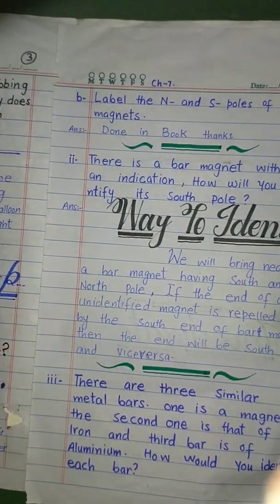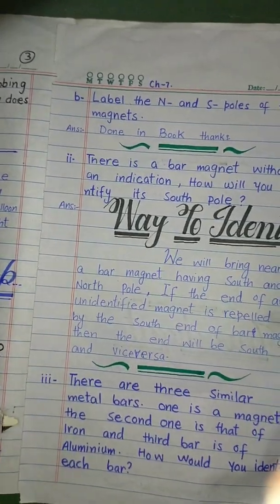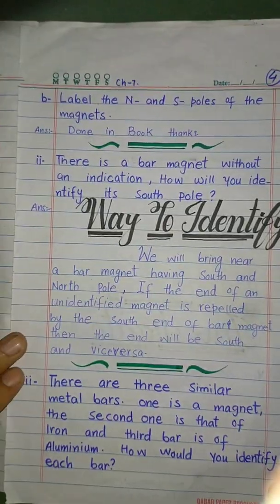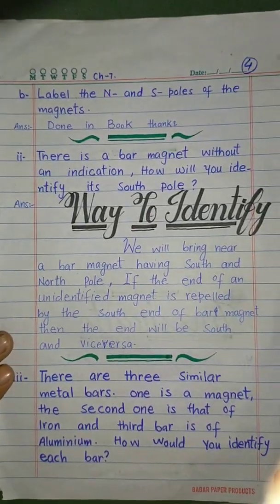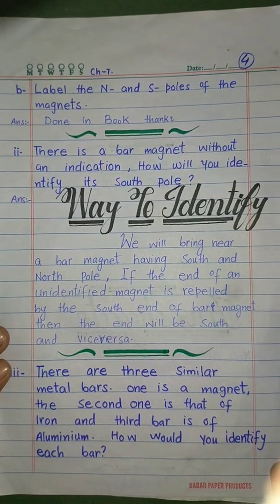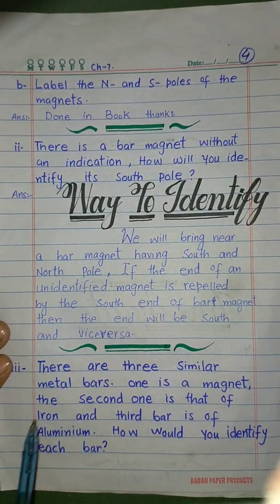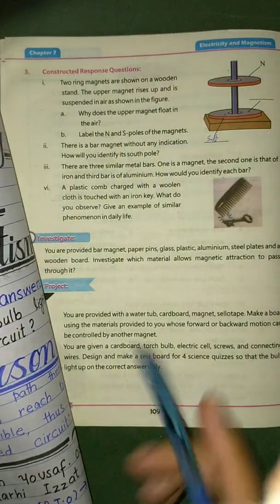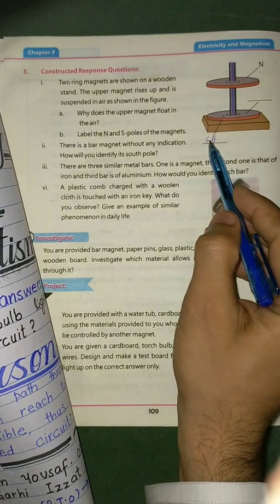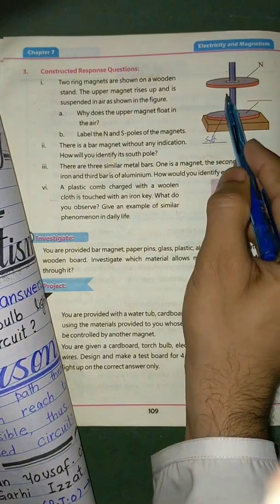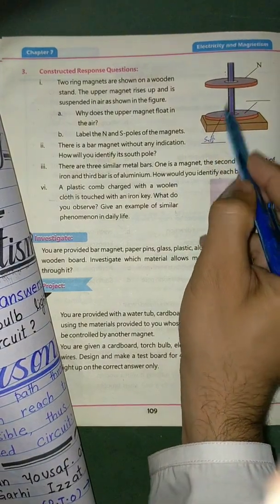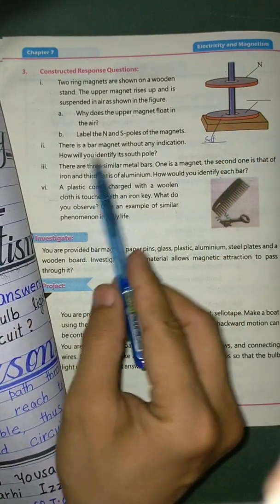Label the north and south poles of the magnets. The lower magnet has south facing up, and the upper magnet also has south facing down — both south poles face each other, causing repulsion, as shown in the diagram.